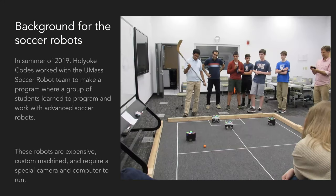Some background on the soccer robots themselves: in the summer of 2019, Holyoke Codes worked with the UMass soccer robot team, where they build robots to compete at national and world competitions, playing soccer autonomously. We worked with them to build a program where students programmed and modified a bit of the code for these robots, where they played a game of soccer, played tag, and played other things. I thought this was really cool — it'd be great if we could do this every week.